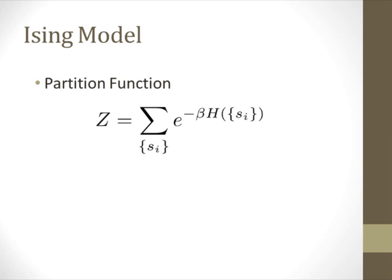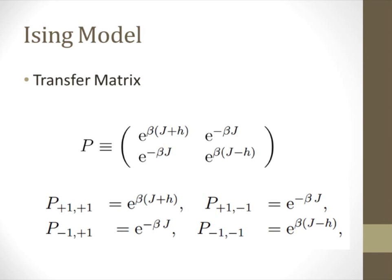Let's define the transfer matrix P such that P contains all the information about how adjacent spins can interact. If we associate the first row and column with positive spins, and the second row and column with negative spins, we can assign all four possible energy states. If there are n spins, then we need n transfer matrices, each operating on the next. The trace of this product is our partition function.